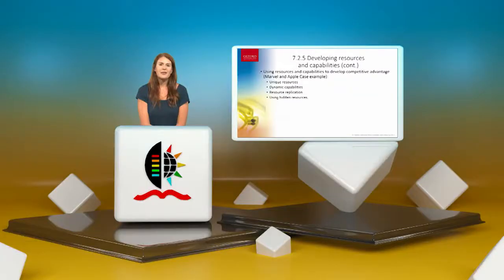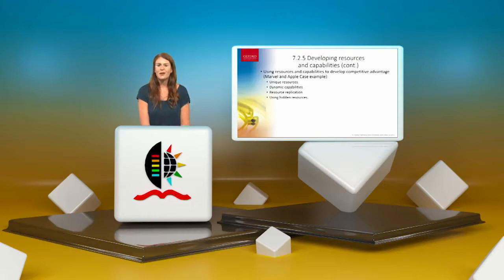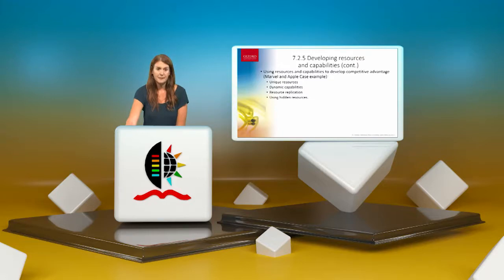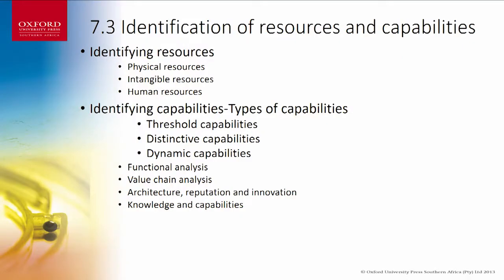Using resources and capabilities to develop competitive advantage — examples include Marvel and Apple. Key elements include unique resources, dynamic capabilities, resource replication, and using hidden resources. Identifying resource capabilities involves looking at physical resources, intangible resources, and human resources. You can also refer to these as assets.